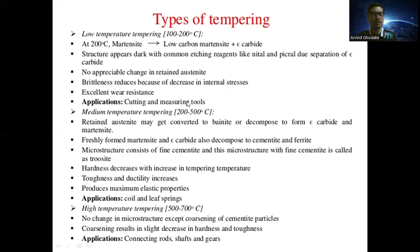The second type is medium temperature tempering, in the range of 200 to 500°C. Here, retained austenite may get converted into bainite or decomposes to carbide and martensite. Freshly formed martensite and carbide also decompose to cementite and ferrite. The microstructure consists of fine cementite, and this microstructure is called troostite. Hardness decreases with increasing tempering temperature, while toughness and ductility increase. It produces maximum elastic properties in the steel. The application is making coil and leaf springs used in suspension systems.